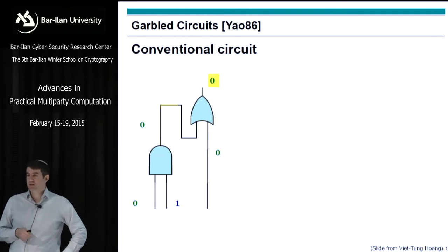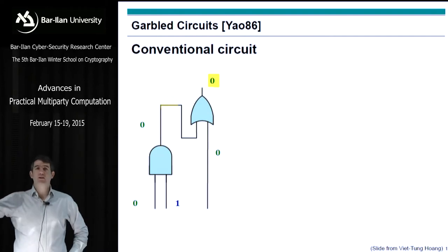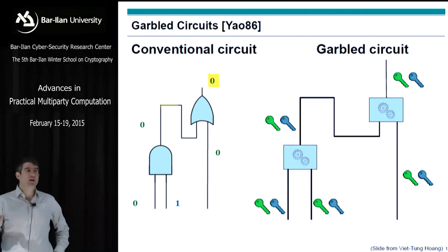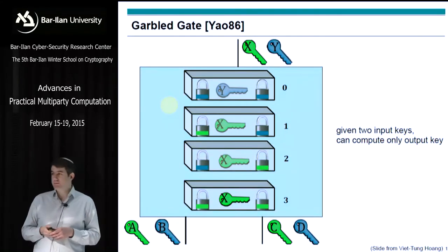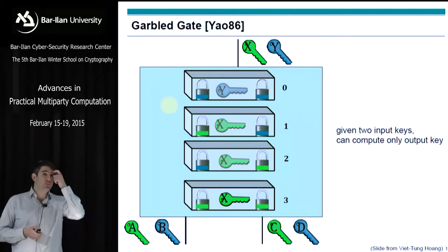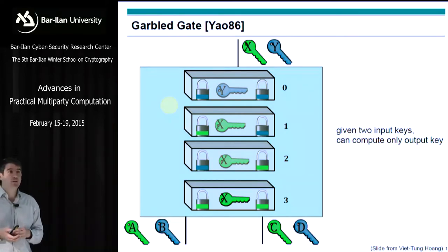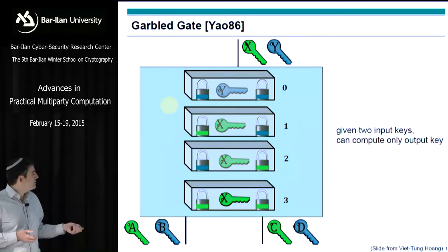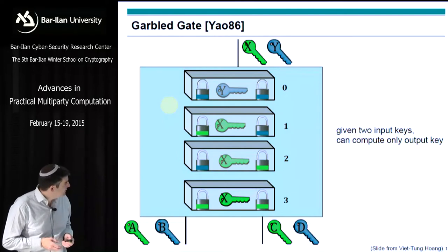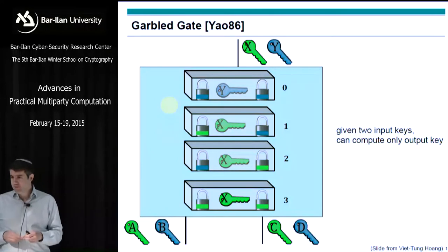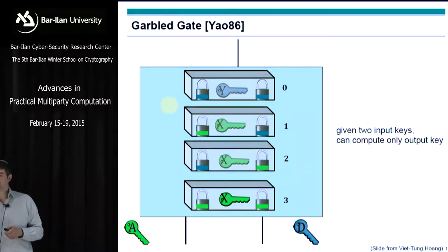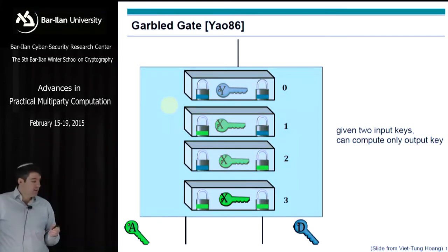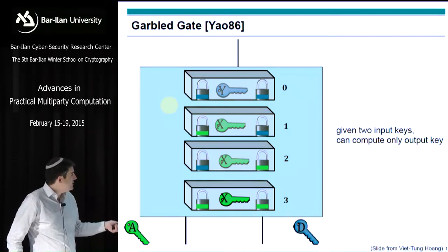This is a conventional circuit — you compute AND and OR, get the result at the end. In a garbled circuit, you have encryption keys instead. The keys look random, but if you have one key on every input wire, you can still compute the output. This is how a garbled gate looks: you have four boxes or four encryptions. For an AND gate, you have one blue key for the one value and three yellow/green keys for the zero values. Given one of each of the correct input keys, you can compute the output key.